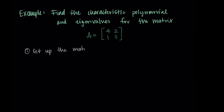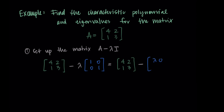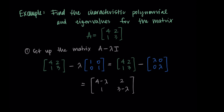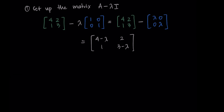Our first step is to set up the matrix A minus lambda I, since our goal is to take its determinant and set it equal to zero. We take matrix A — [4, 2; 1, 3] — and subtract lambda times the identity [1, 0; 0, 1]. Distributing lambda into the identity gives lambdas on the diagonal. Combining the two matrices gives [4 - lambda, 2; 1, 3 - lambda]. Essentially, you subtract lambda from the diagonal elements and leave the other entries unchanged.